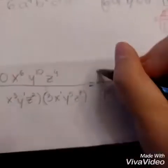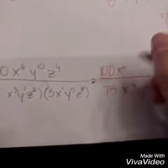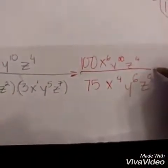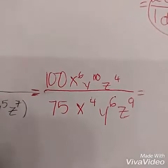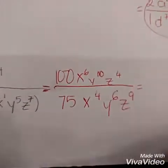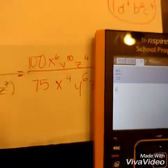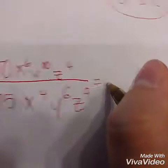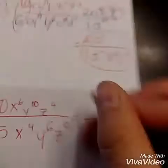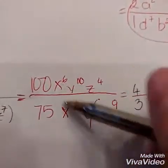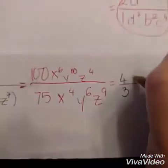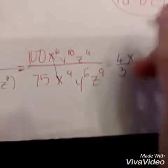On the top, I keep them exactly the same: 100, x to the power of 6, y to the power of 10, z to the power of 4. Now it becomes the problem we know how to do. First, divide 100 by 75 — that gives 4 over 3. I keep the coefficient exactly the same: 4 over 3. Now for X: they're on opposite sides, so I subtract top to bottom. X to the power of 6 minus 4 is 2.